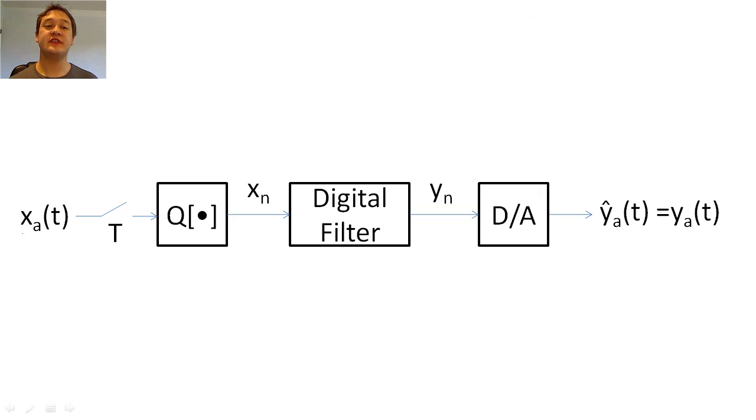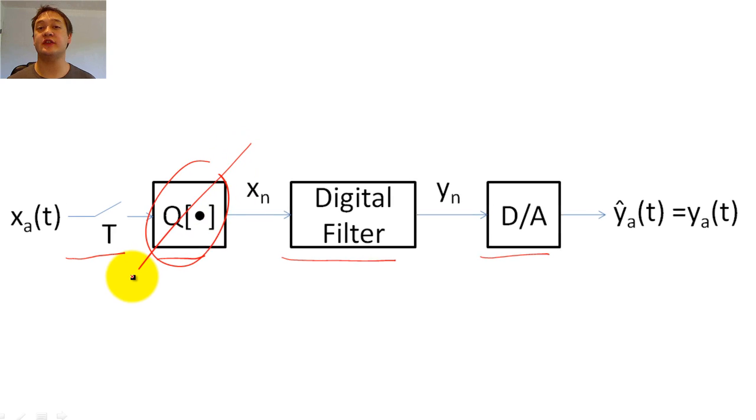Earlier, we learned that our basic digital filter consists of a sampling switch, a quantizer, a digital filter, and D2A converter. For the sake of simplicity, we will ignore the effects of the quantizer on filtering.